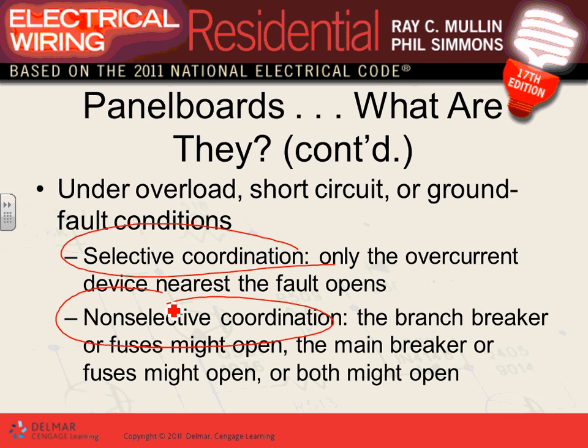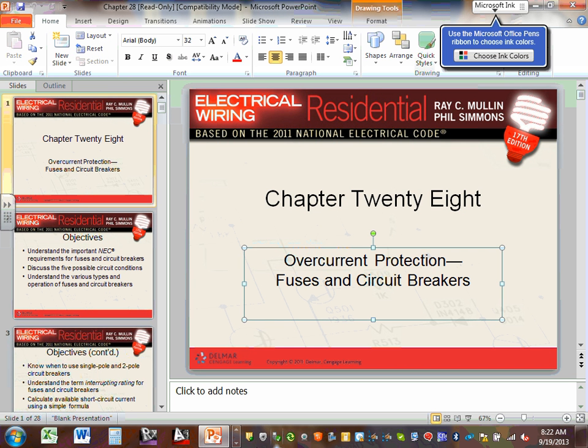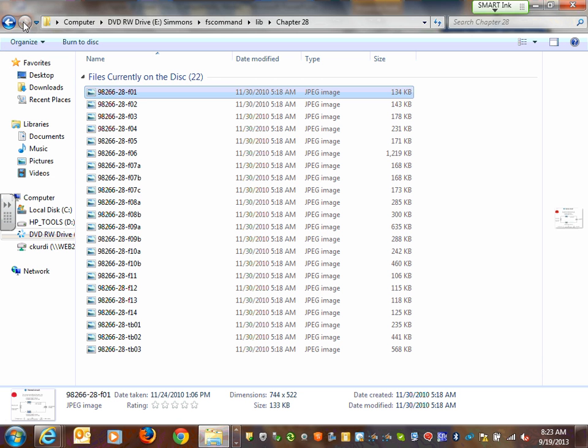In 99% of commercial and industrial power systems, we want selective coordination — at least 90% of the time. That's a few key things about short circuit and overcurrent protection coordination.